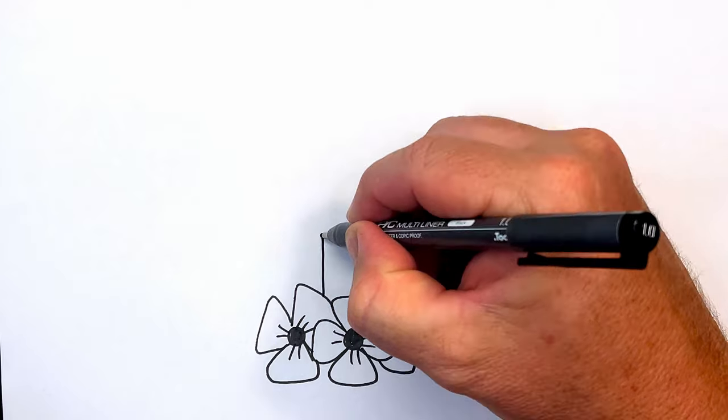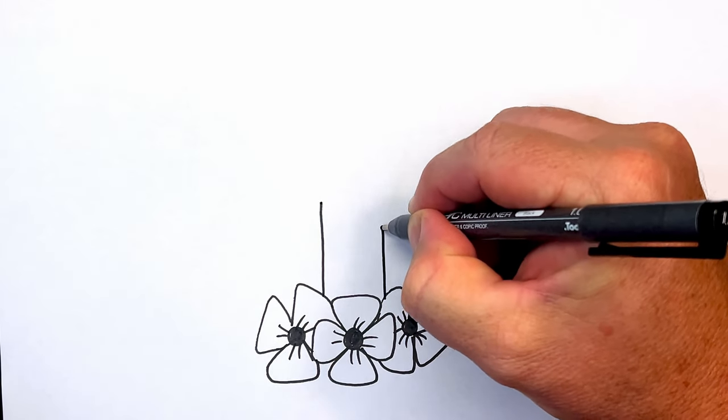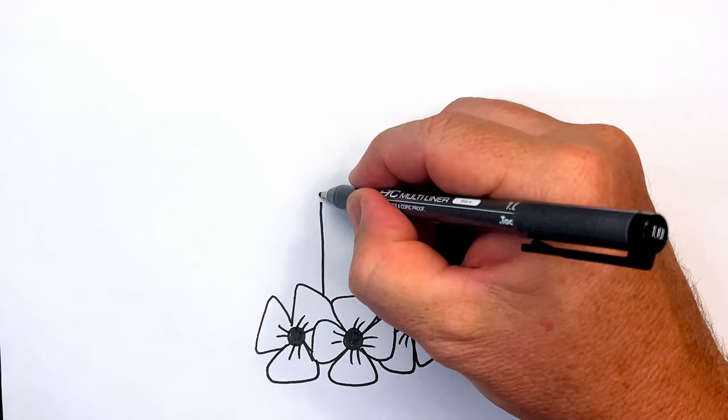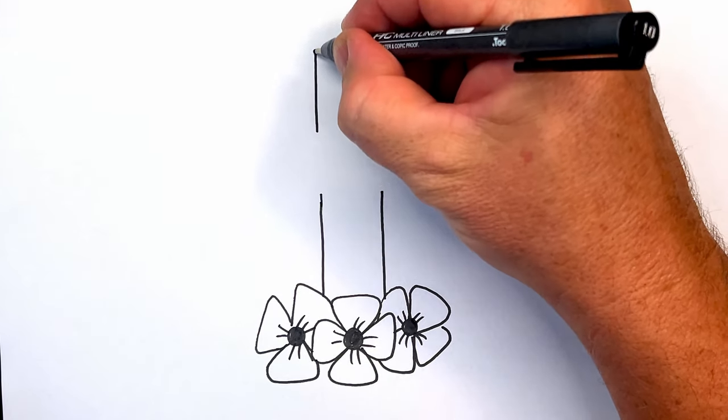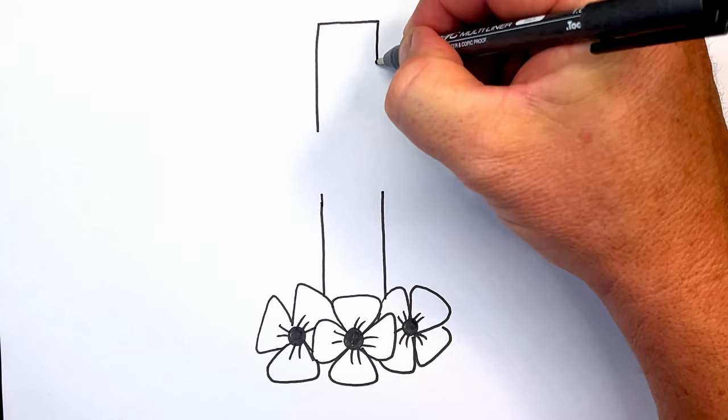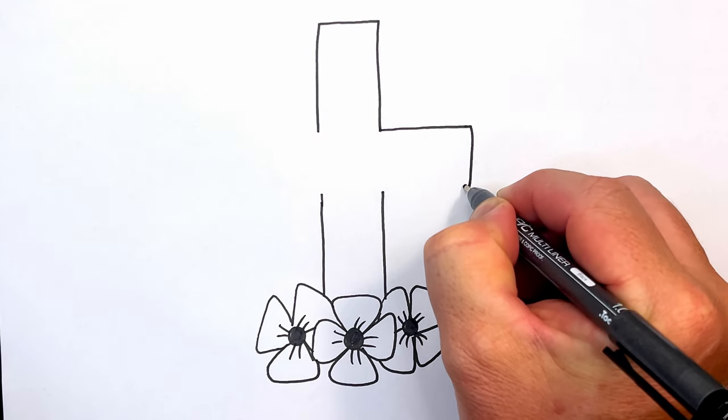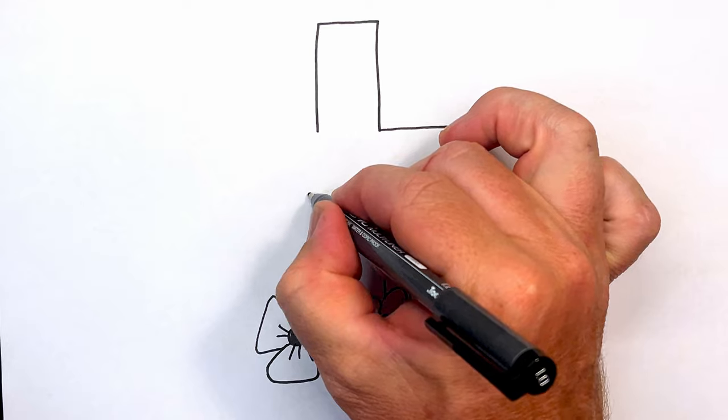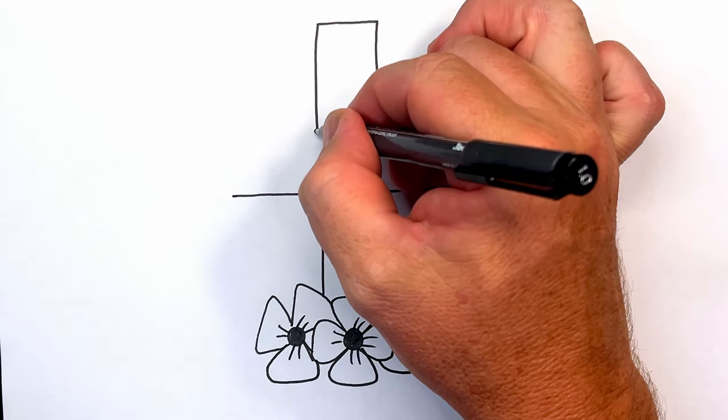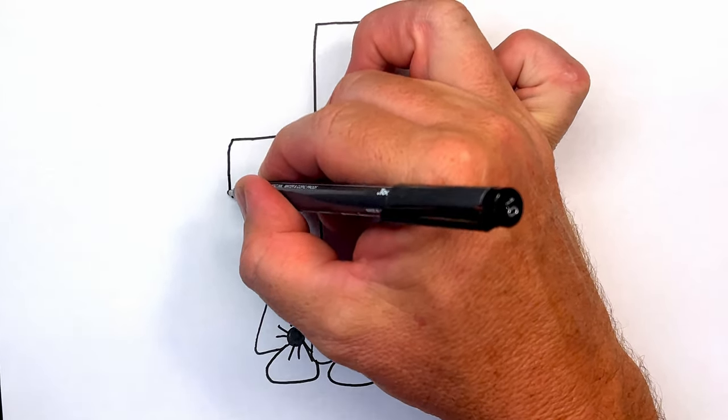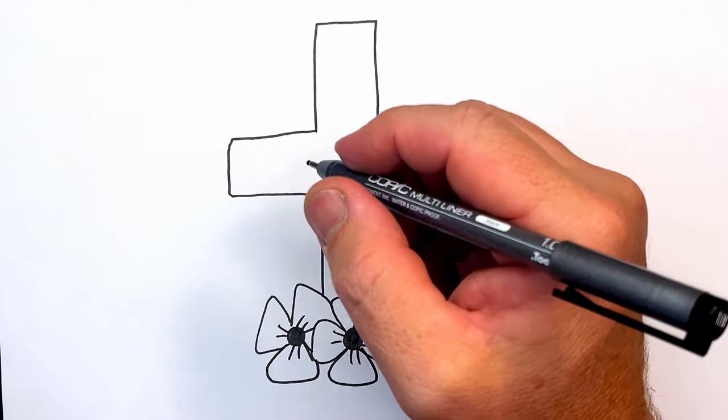Now the next part that I'm going to do is the cross coming up. The cross symbolizes the Fallen Soldiers, and you can see that I've tried to keep my cross the same width. I'm not using a ruler because I want to add a bit of character to my drawing. Make sure you come out horizontally the same on each side of that cross.